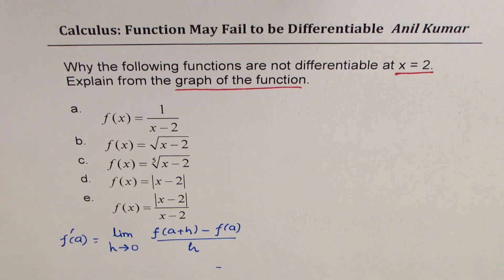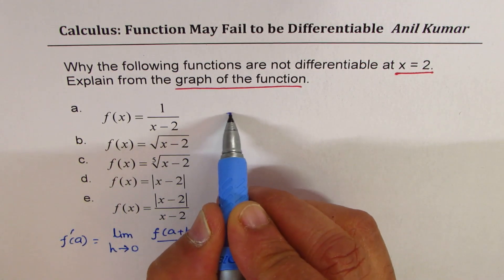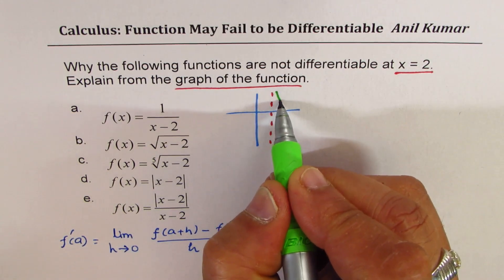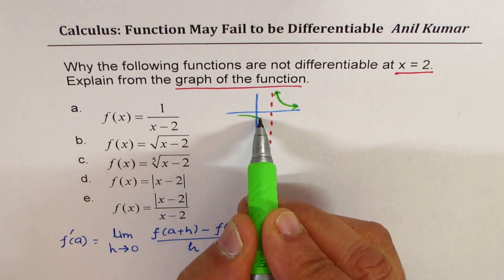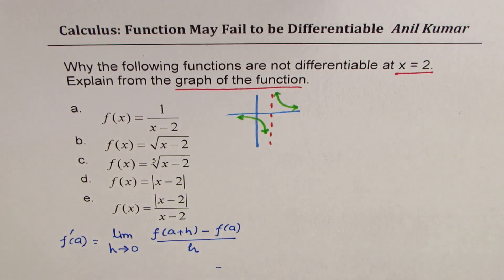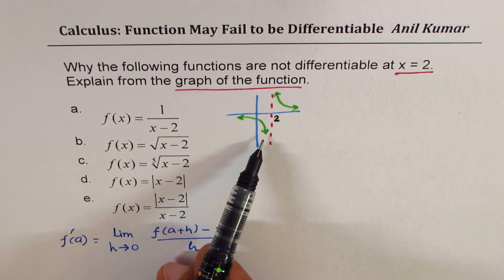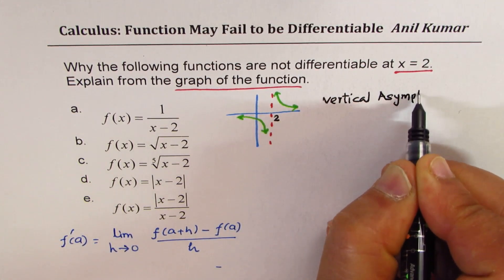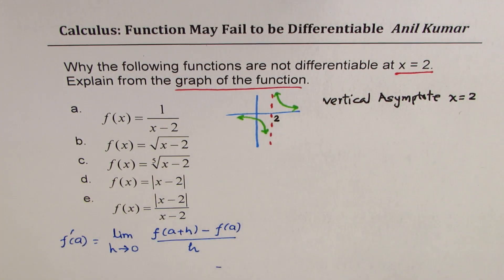So let's try to sketch each of these functions and reason out why they are not differentiable at x equals to 2. The very first function is a reciprocal function. If you sketch it, what you get is a vertical asymptote at x equals to 2, and the function will be kind of like this. We're making approximate diagrams here; our idea is to only work near the point x equals to 2. In this case, you see the function is discontinuous — we have a vertical asymptote.